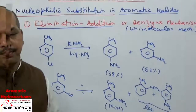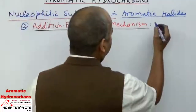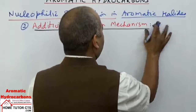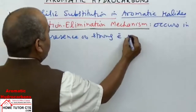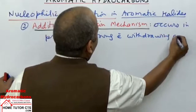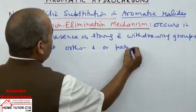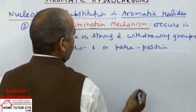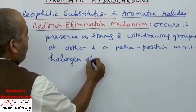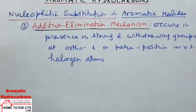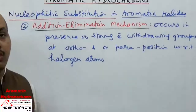Next is the addition-elimination mechanism, also called the bimolecular mechanism. This reaction occurs in the presence of strong electron-withdrawing groups at the ortho and/or para positions with respect to the halogen atom.